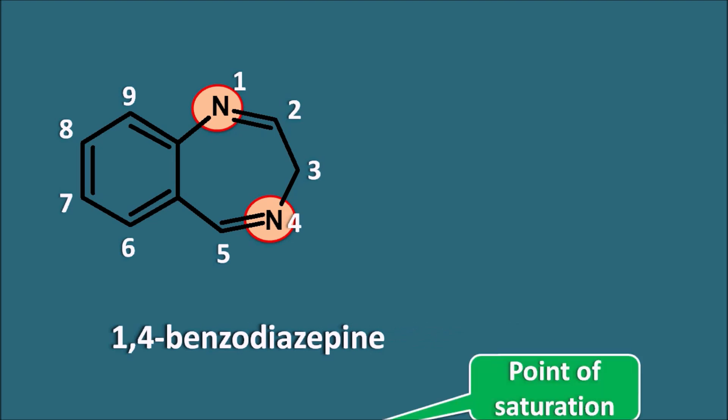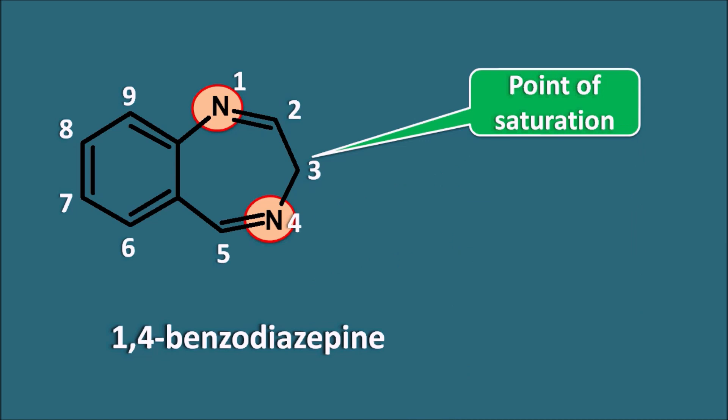At the third position, a point of saturation is naturally observed in this ring system. This is indicated by the indicated hydrogen — here this is 3H. The H is written in italic to indicate that it is a point of saturation naturally present in the structure.